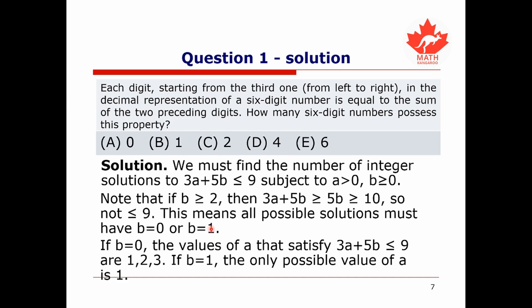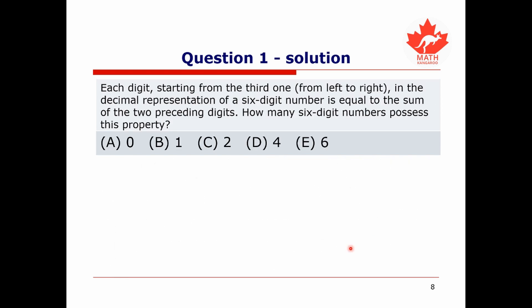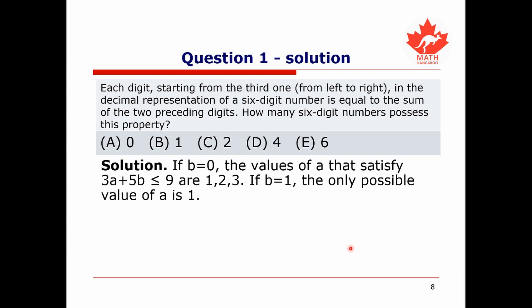Let's consider both cases and use the additive principle to count total solutions. If B equals 0, the values of A satisfying 3A ≤ 9 are 1, 2, and 3 — giving three solutions. If B equals 1, the only valid value is A equals 1, because any larger A makes 3A + 5 exceed 9 — giving one solution.